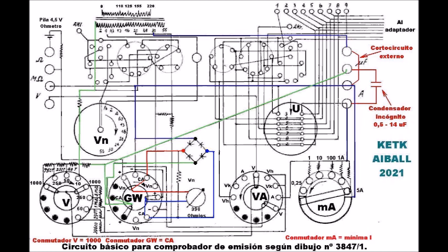El polo activo del capacímetro va conectado a la salida de 30 voltios en corriente alterna del secundario y al primer polo en cortocircuito con el tercero. Desde ahí, el polo pasa al conmutador MA, que se debe colocar en su rango más bajo de 0,25 miliamperios, lo que deja el circuito en circuito abierto y no pasa corriente alguna por el condensador incógnito.